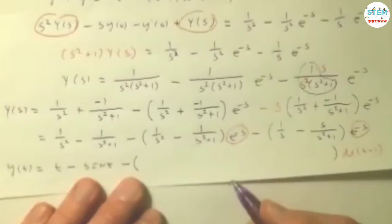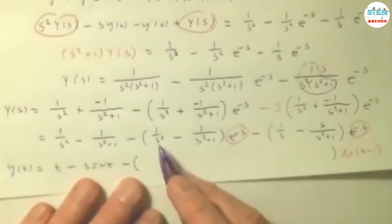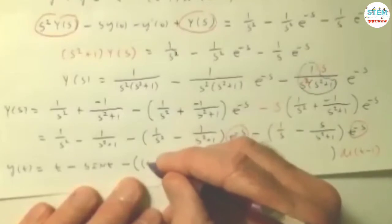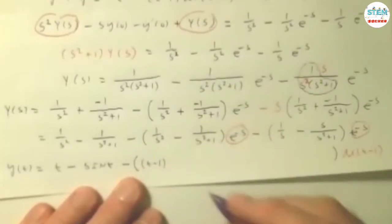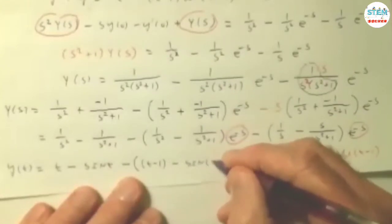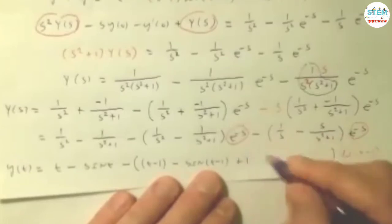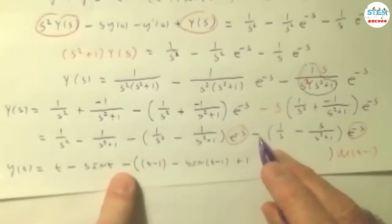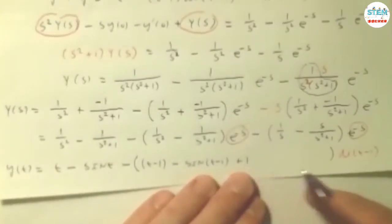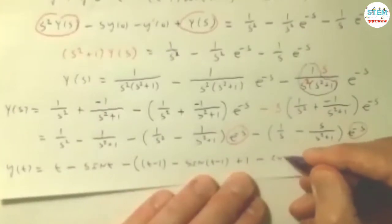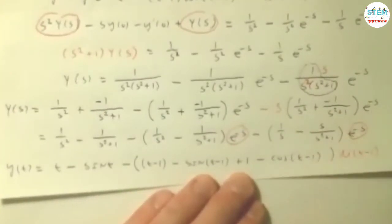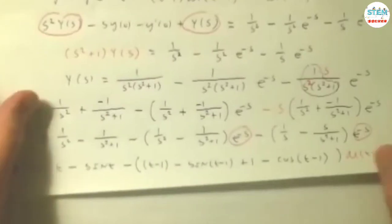So 1 over s squared becomes t. Again, because of that, you have to have t minus 1. Minus, that would be sine of t, but again, because of that, it's sine of t minus 1. This would be 1. I've already pulled the negative out here, so I'm going to worry about that negative here. When t minus 1 is 0, it's still 1. That becomes cosine, so minus cosine of t, that t becomes t minus 1. Hopefully that makes sense.